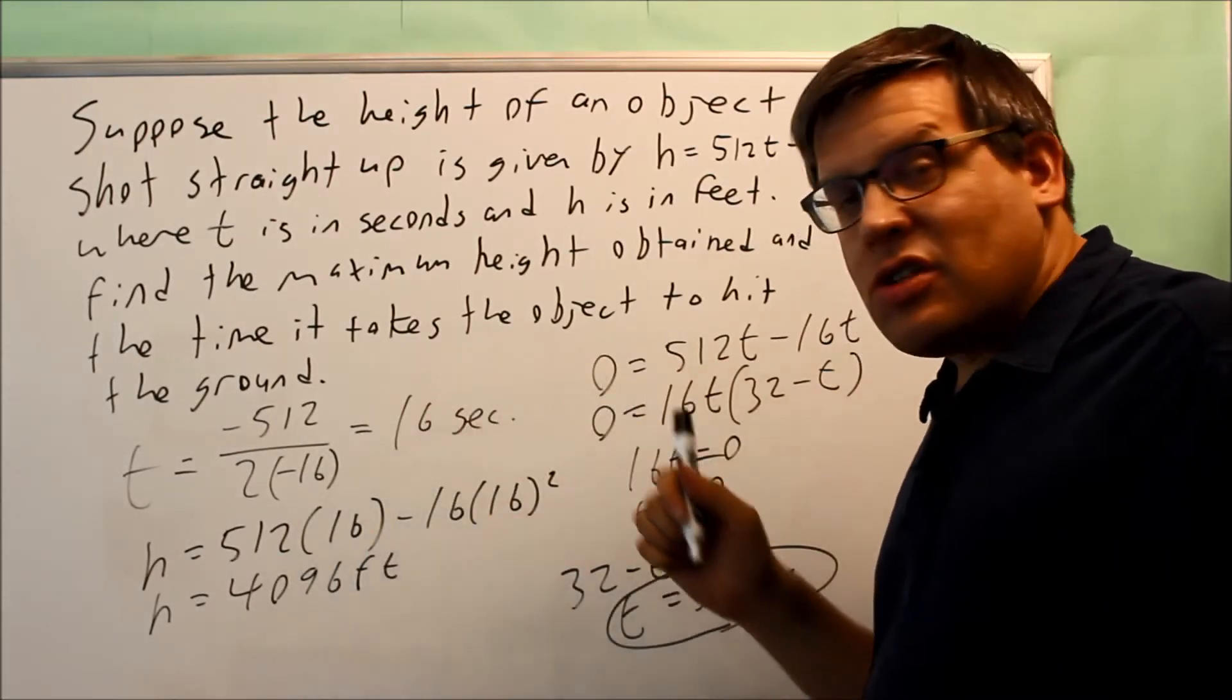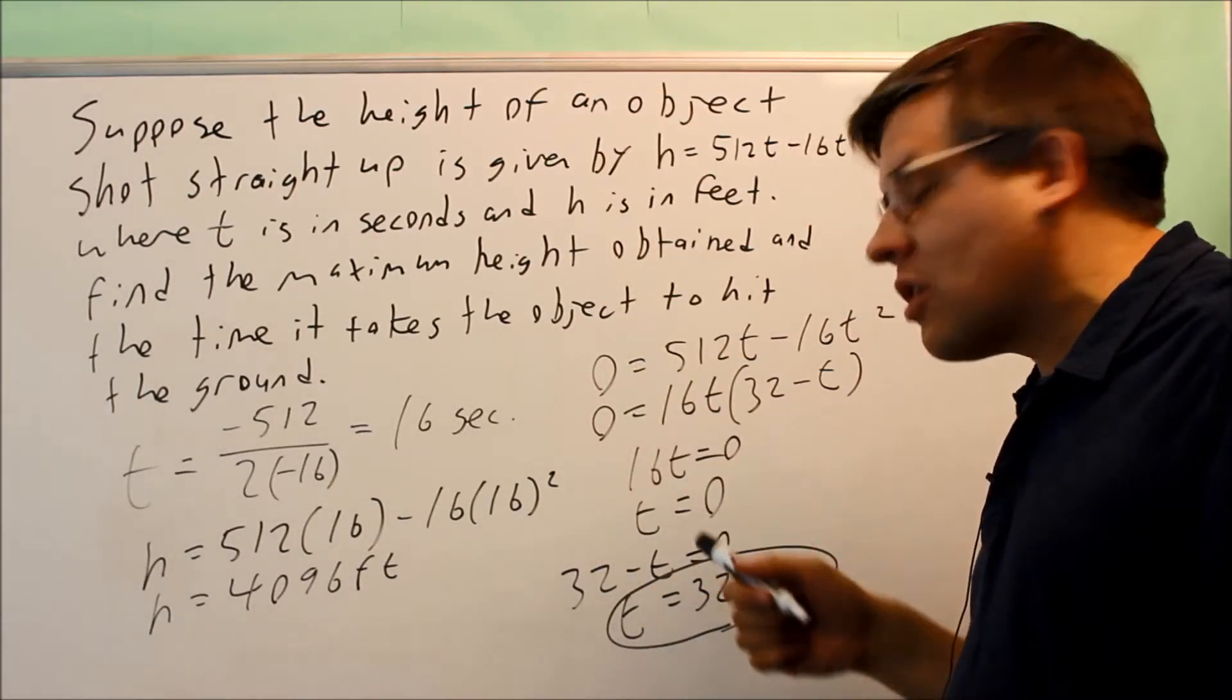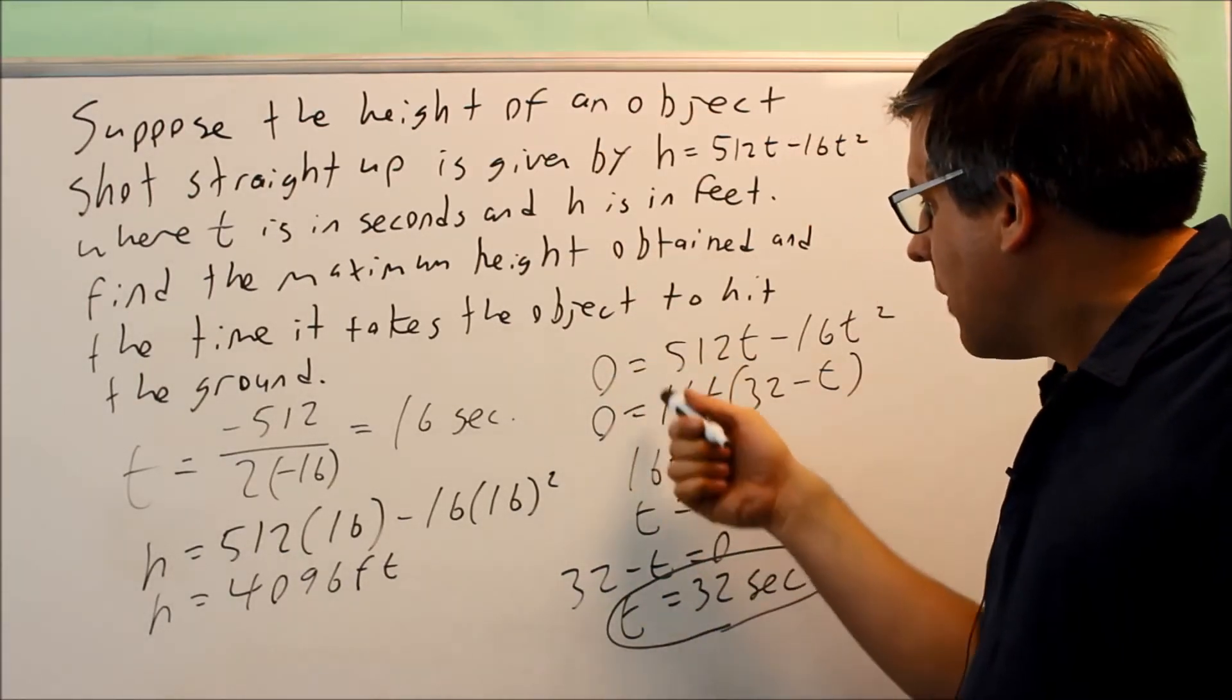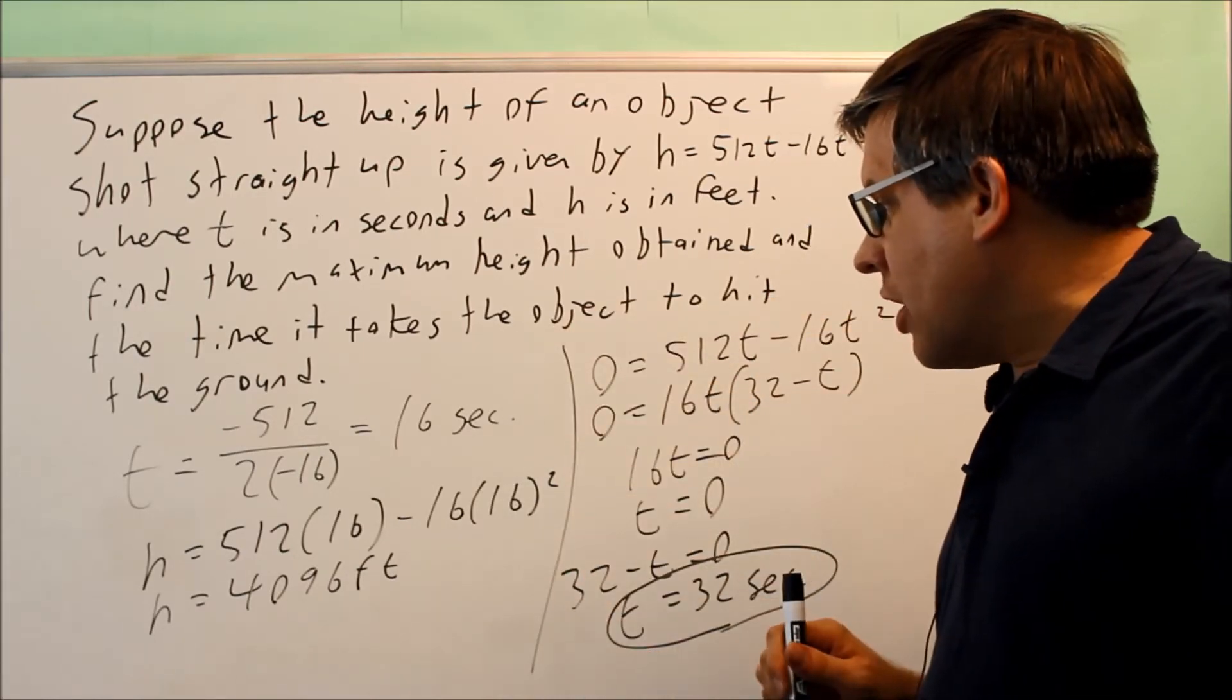So again, you could just double the 16: 16 seconds up and 16 down gives you 32 seconds total. Or you can set h equal to 0 and work through it algebraically, and you get that as your answer.